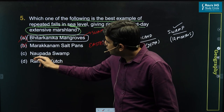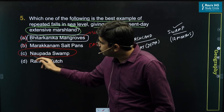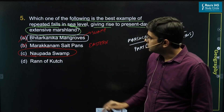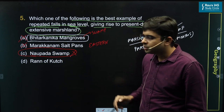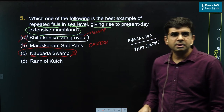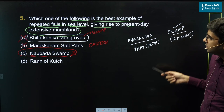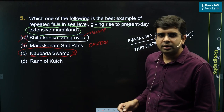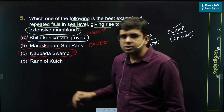What about Naupada swamps? Once again, the swamp terminology is there, so we can eliminate that because there is a difference between marshland and swamp. So only one option is left — that is Rann of Kutch.